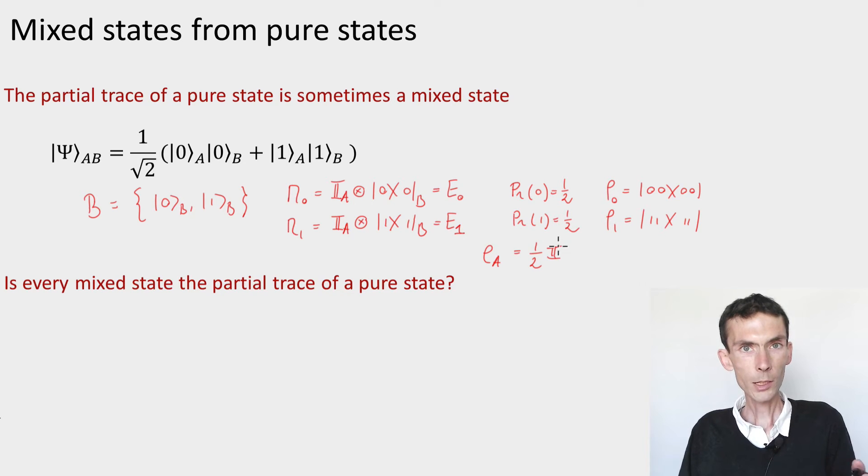So here we have a pure state, a global state. It's entangled. I take the reduced density on system A, and I obtain a mixed state. The question is whether this process is reversible, or more generally, whether given a density matrix, we can always write it as the reduced density on the system of a pure state of a larger system.